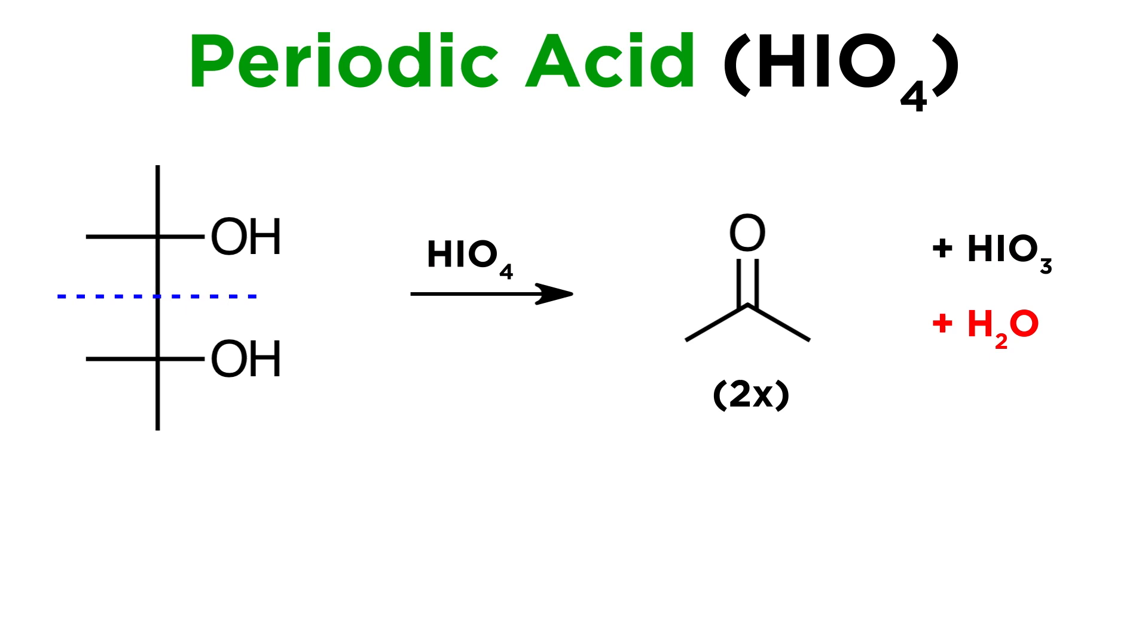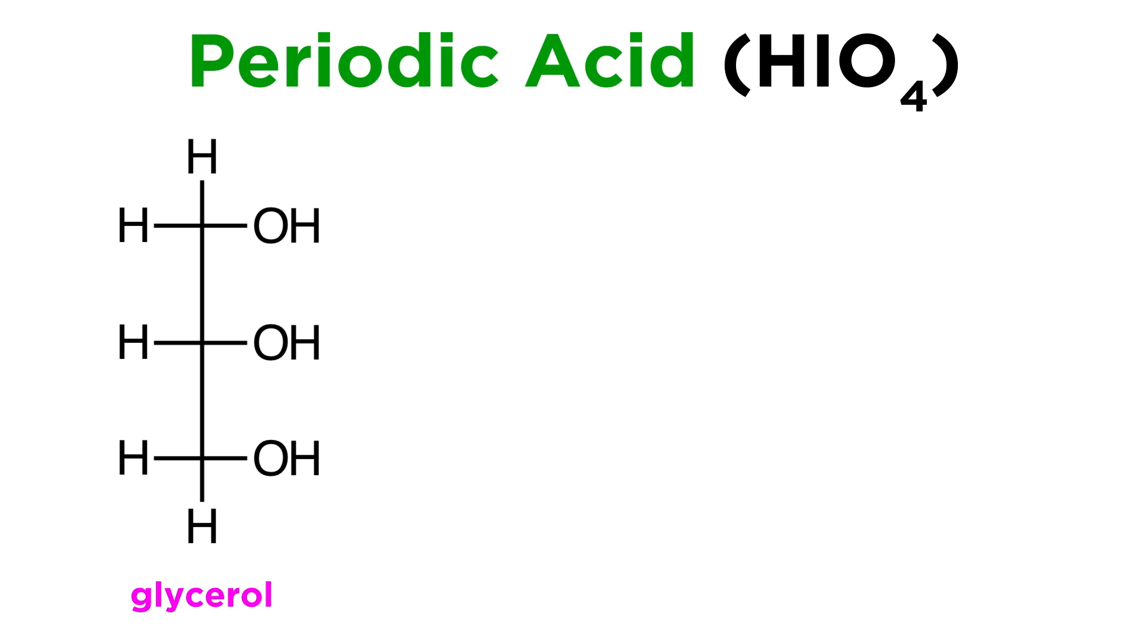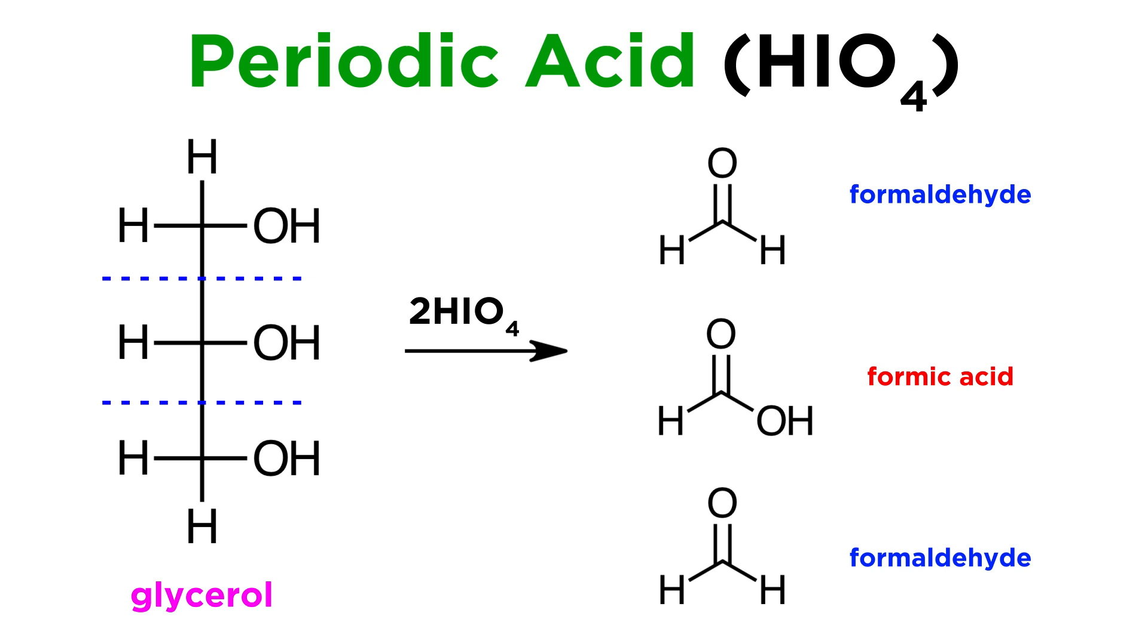Now before looking at the mechanism, let's continue to highlight specific substrates so we can observe what occurs in each case, as there are several possibilities. Take glycerol for example. This has three hydroxyl groups on three consecutive carbons. This will require two equivalents of periodic acid to fully react, and we will be left with two equivalents of formaldehyde, and one equivalent of formic acid.